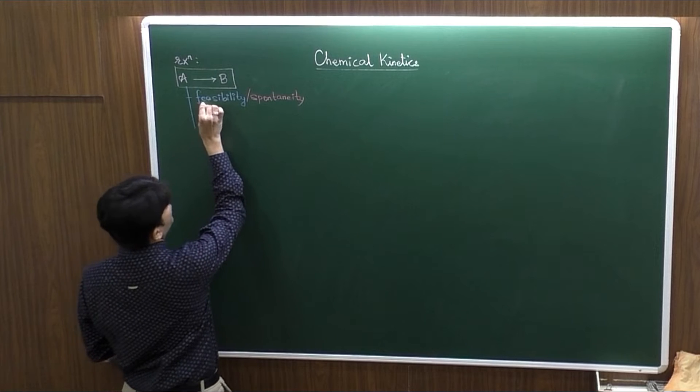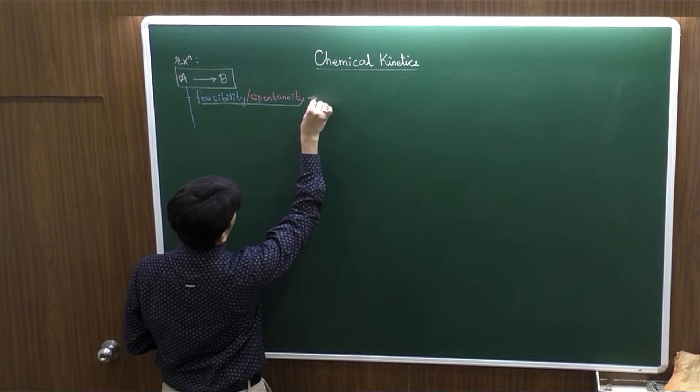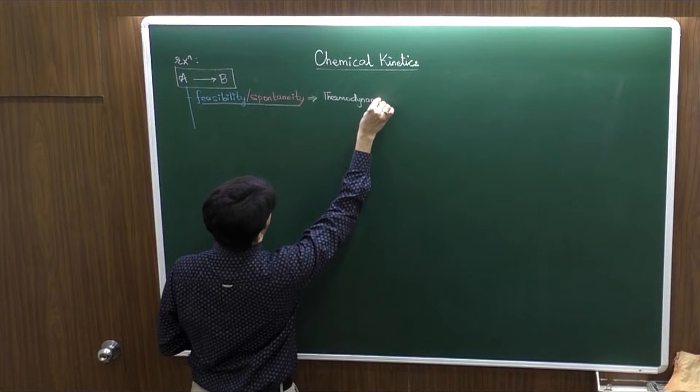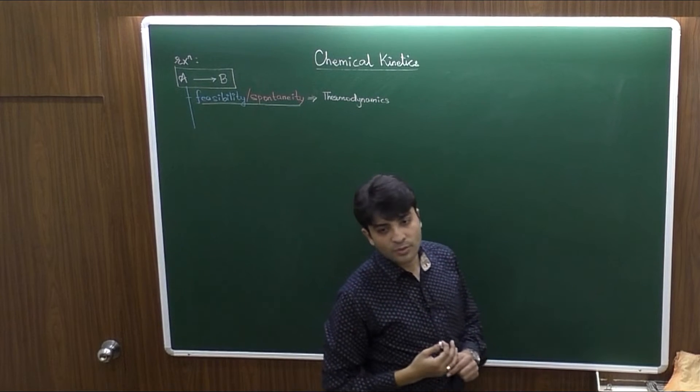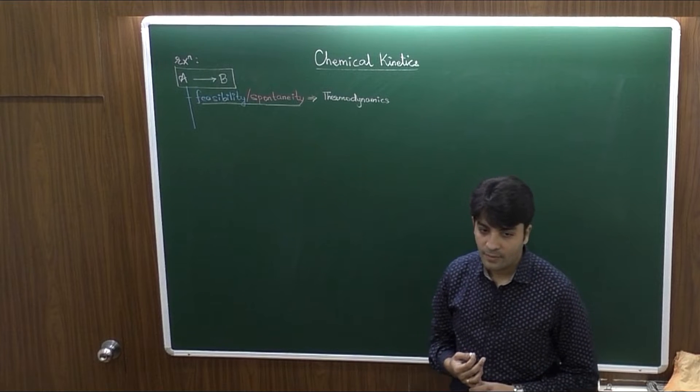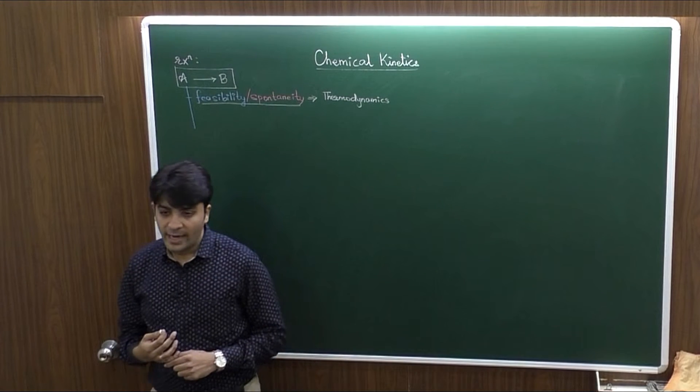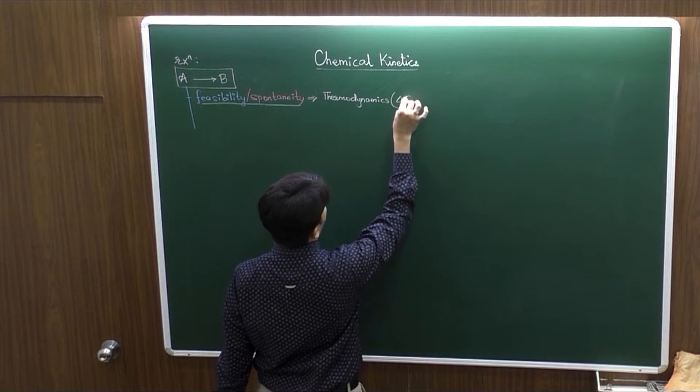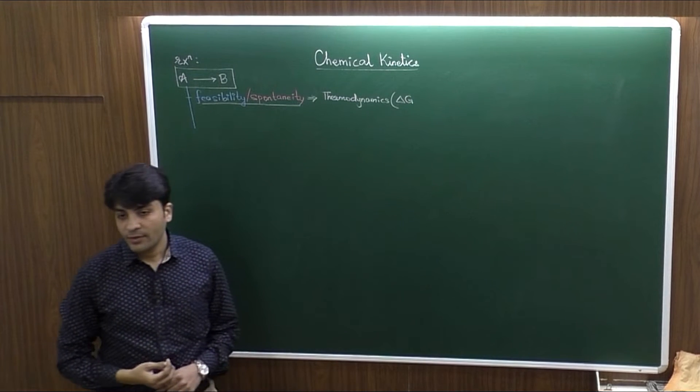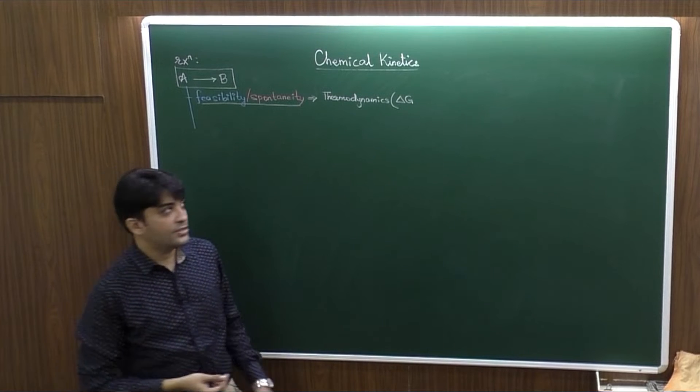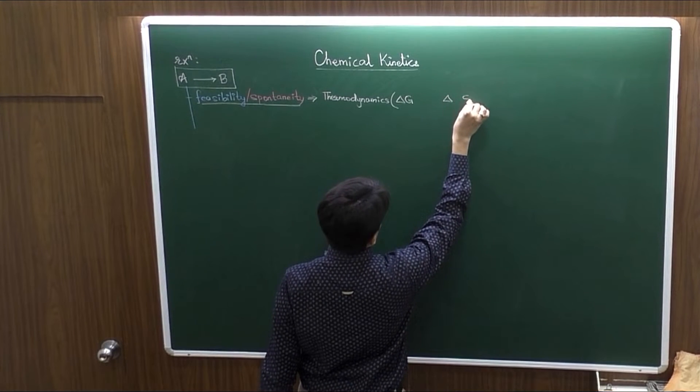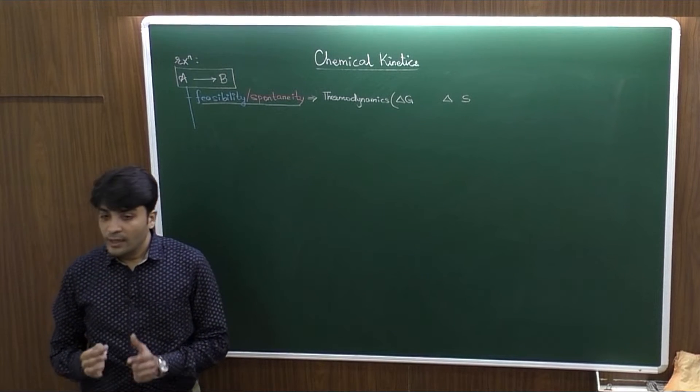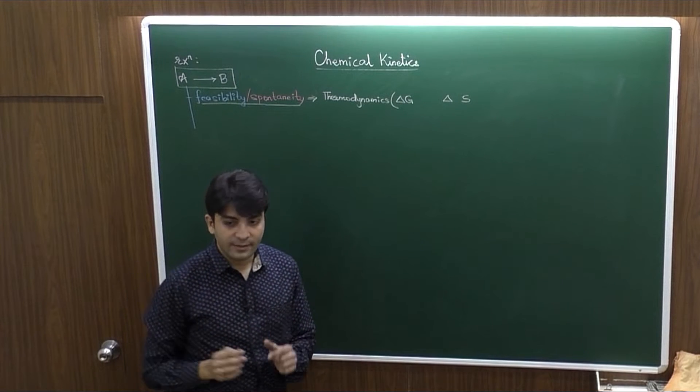Now this feasibility or spontaneity of a reaction is determined by the branch of physical chemistry that is thermodynamics. In surface chemistry, I had talked about this feasibility concept with a parameter delta G called Gibbs free energy. And one more parameter delta S called entropy.